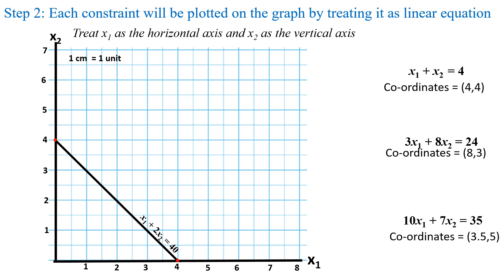Next, locate the second constraint coordinates. The second constraint equation is 3x1 plus 8x2 equal to 24 with coordinates (8, 3). Mark 8 on the x1 axis and 3 on the x2 axis, then join these two points by a line. Next, locate the third constraint equation 10x1 plus 7x2 equal to 35. Its coordinates are (3.5, 5). Mark 3.5 on the x1 axis and 5 on the x2 axis, then join these two points by a line.